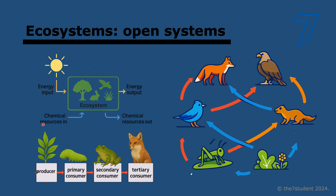Producers do photosynthesis and turn light energy into chemical energy. Chemical energy is basically carbon compounds, because when you break carbon compounds, you release energy — that's why it's called chemical energy. Consumers then obtain energy from the organisms on which they feed. The primary consumer feeds on the producer, then the secondary on the primary, and so on. Nothing feeds on the last organism of the food chain.